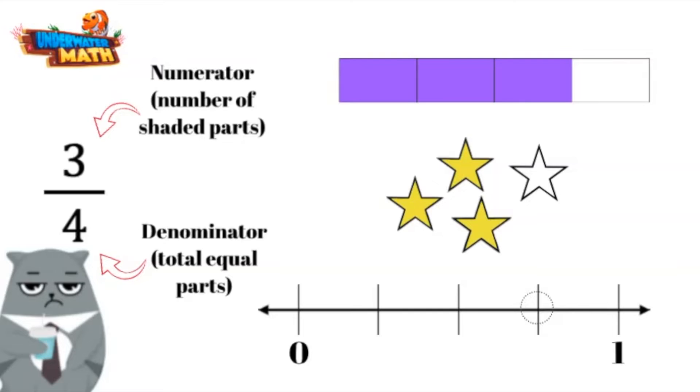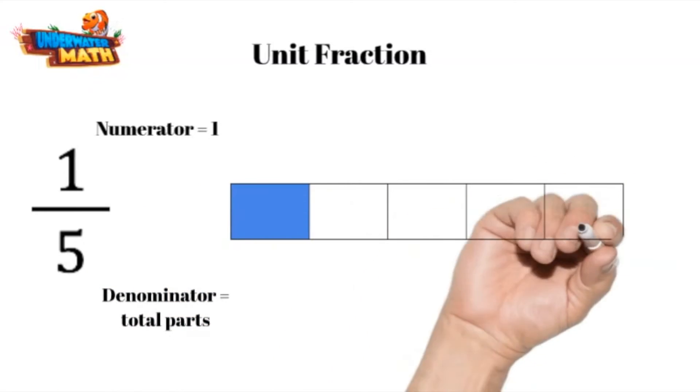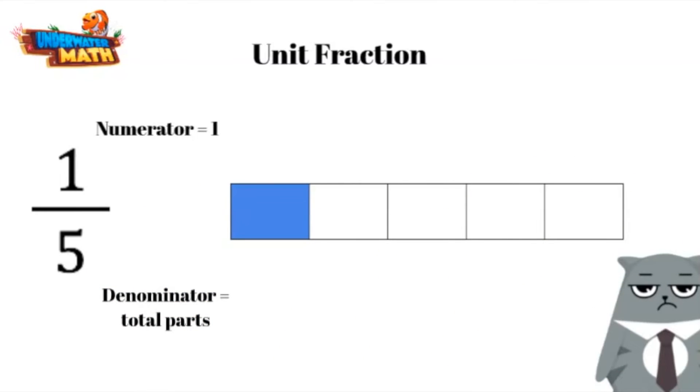In this video we will be looking at specific types of fractions called unit fractions. The numerator in a unit fraction is always one and the denominator is the total number of equal parts. In this model the shaded piece is one unit fraction.